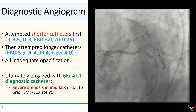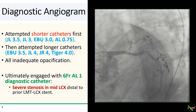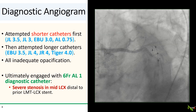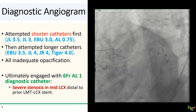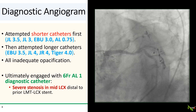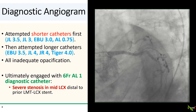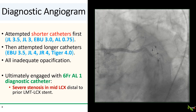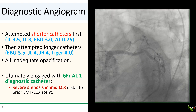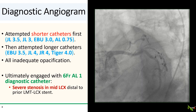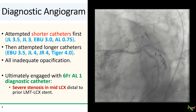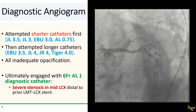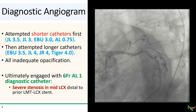A 6 French AL1 diagnostic catheter engaged the left main, albeit extremely tenuously. And here is what we see: there is a severe stenosis in the mid-circumflex just distal to the prior stent, and that was the culprit lesion, and it needed to be fixed.